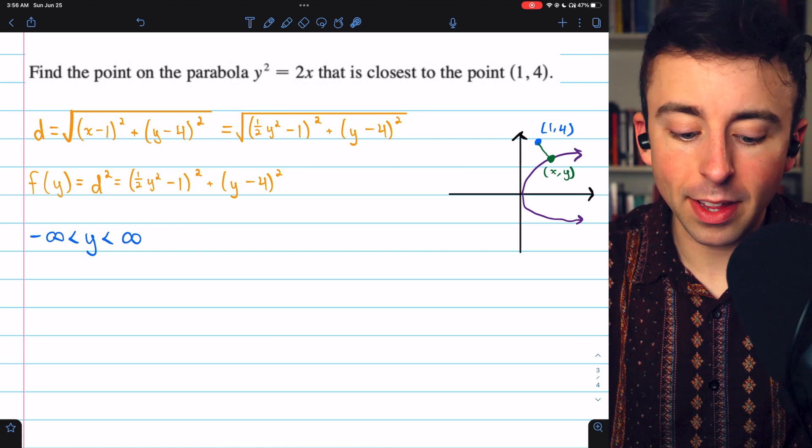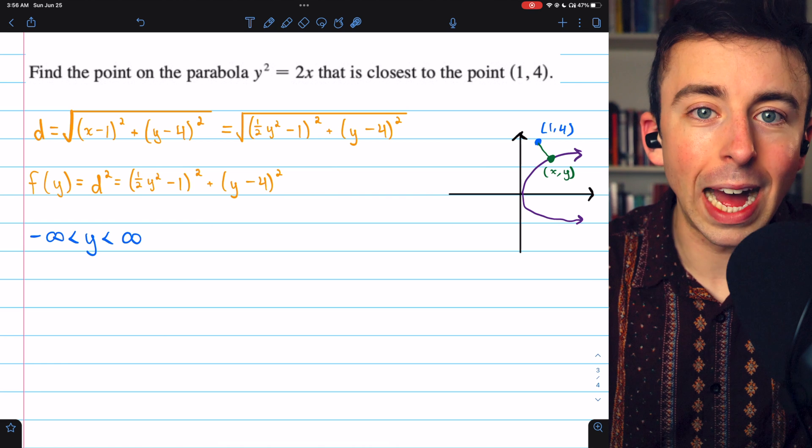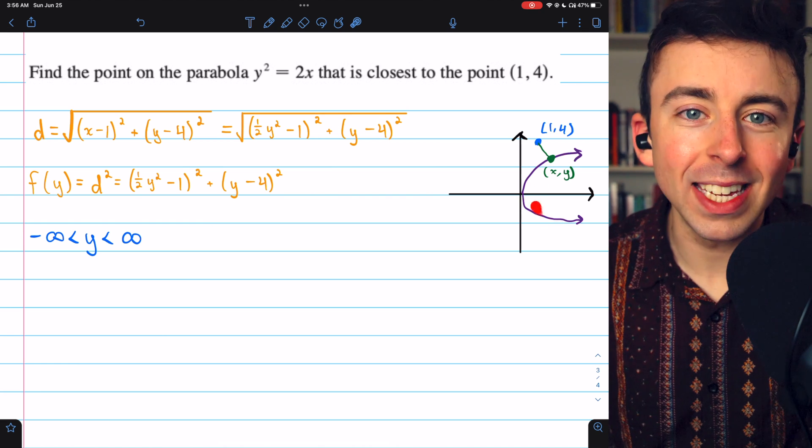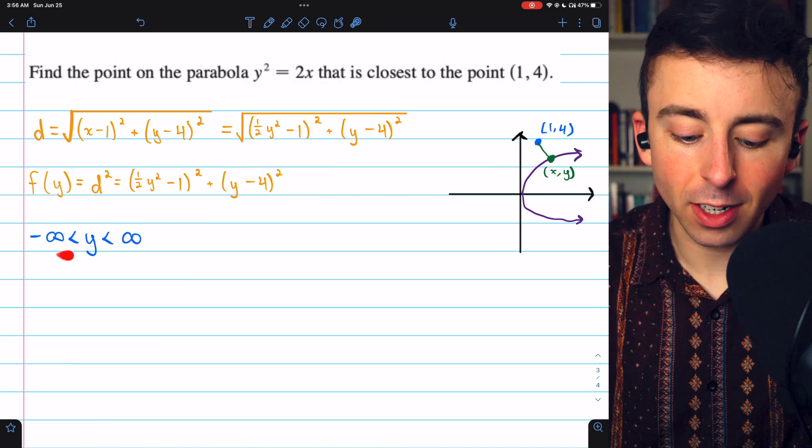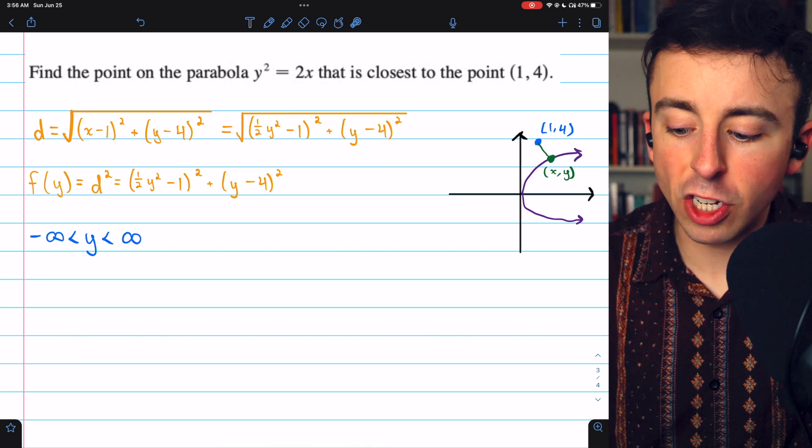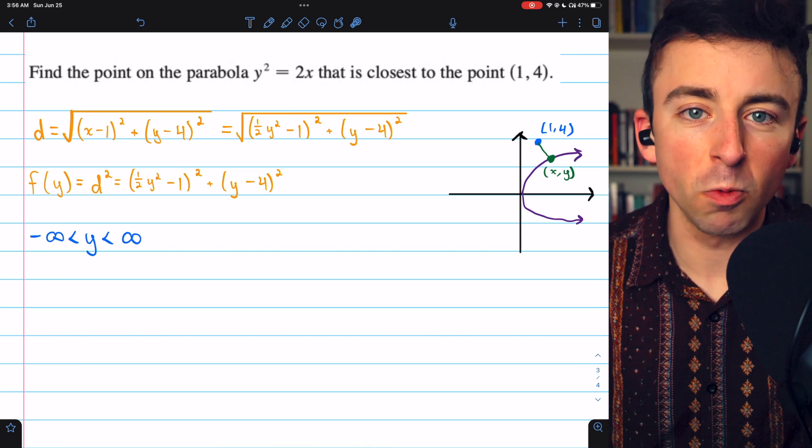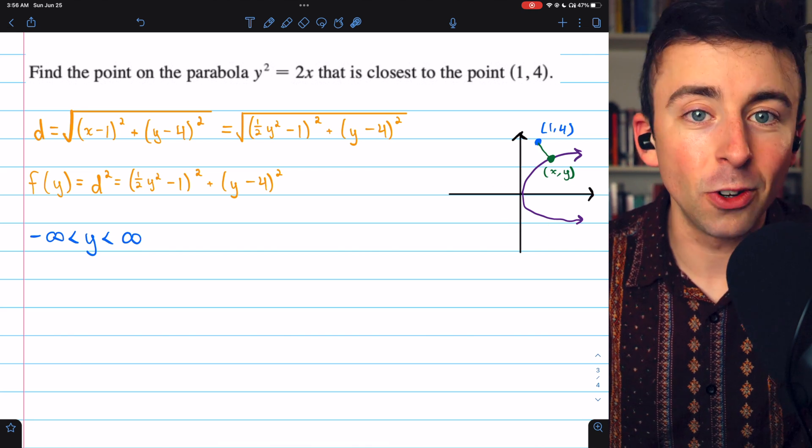We also need to identify the domain of our function, the allowable values for y. In this case, y could be anything from negative infinity to positive infinity. This is a geometric situation, so there's no real world restrictions. Y could be anything.